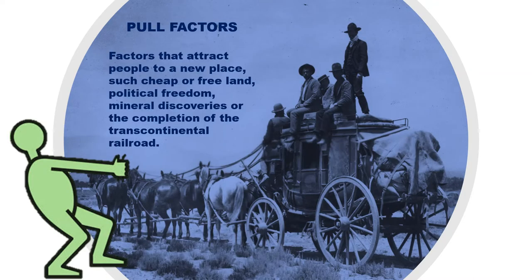Other times, migration is based on pull factors, or factors that attract people to a new place, such as cheap or free land, political freedom, mineral discoveries, or the completion of the Transcontinental Railroad. Both factors were important in the settlement of the West, but certainly pull factors were crucial in attracting new settlers.